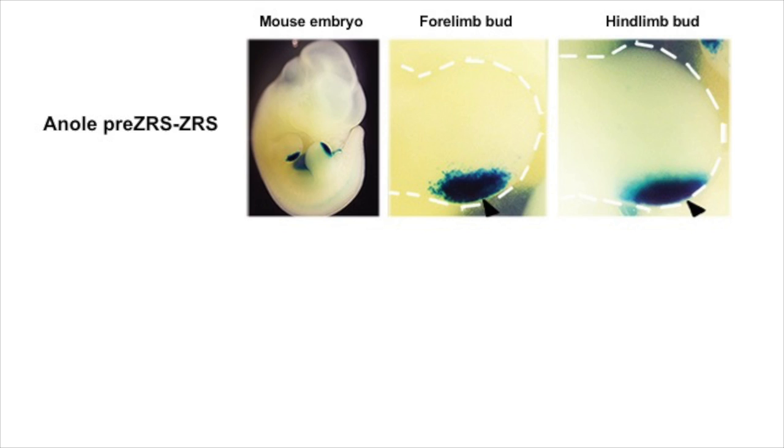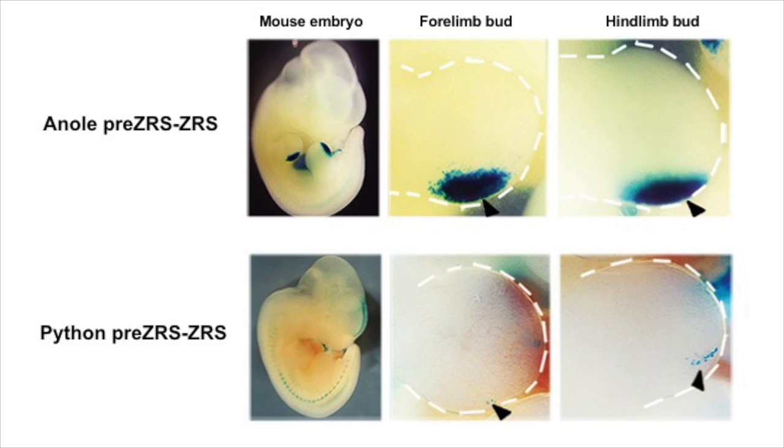So we next asked whether there was any functional consequence of that region of degeneration in the ZRS of pythons by making transgenic mice, first putting in the anole lizard pre-ZRS construct, and then comparing its activity to that of the python enhancer. And as you can see here, when we put the anole enhancer into mice, it drove a pattern of reporter gene expression that's very typical of sonic hedgehog for a limbed vertebrate. There's expression in the forelimb bud and the hindlimb bud of the mouse.